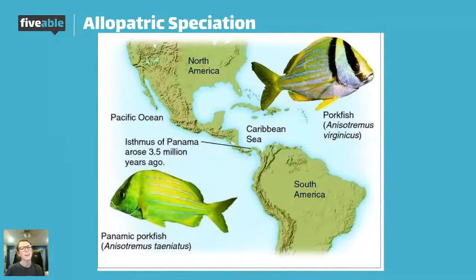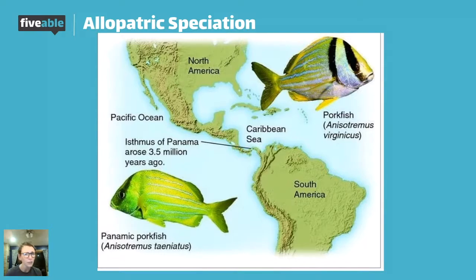You can look at these fish and kind of see the similarities in the head and the stripes, but there's some sort of benefit to the Panamic pork fish being a brighter green. Perhaps the environment has a lot more greenery, whereas the pork fish has a bunch of different colors — perhaps mimicking another species so that enemies don't eat them. There's definitely rationale behind why these guys have evolved to look a little bit different.